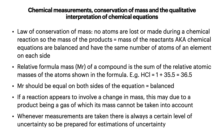Essentially, no atoms are lost or made during a chemical reaction, so the mass of the products equals the mass of the reactants. Chemical equations are balanced and have the same number of atoms of an element on each side. I'll explain this a little bit more on the next slide, but first up we have the relative formula mass, which is absolutely vital to this bit of content.